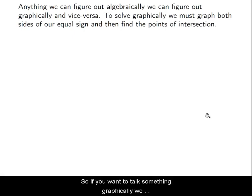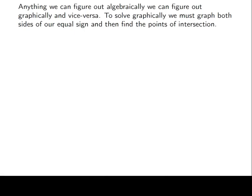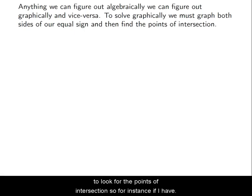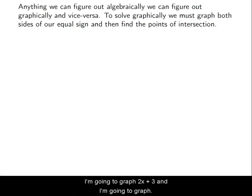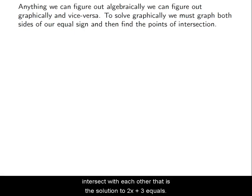So if we want to solve something graphically, we have to graph both sides of our equal sign or our inequality sign. Then after we graph both sides, we look for the points of intersection. For instance, if I have 2x + 3 = 8, I graph 2x + 3 and I graph 8 — where those two functions intersect is the solution.